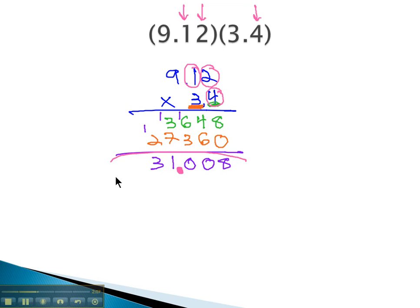Our final answer is 31.008 or 8 thousandths. Notice we can quickly check our answer by doing a little quick multiplication with just the whole number part. 9 times 3,